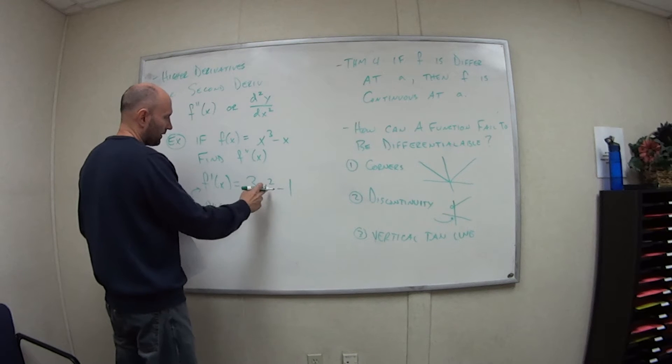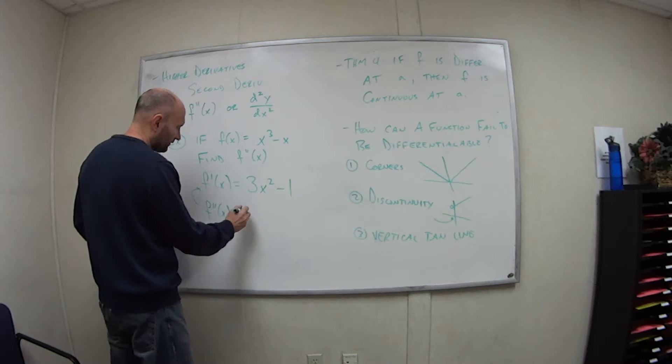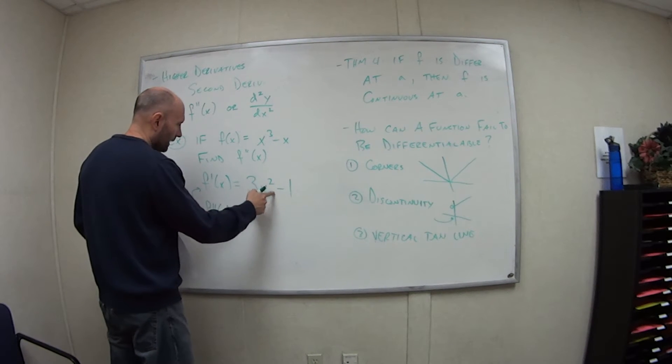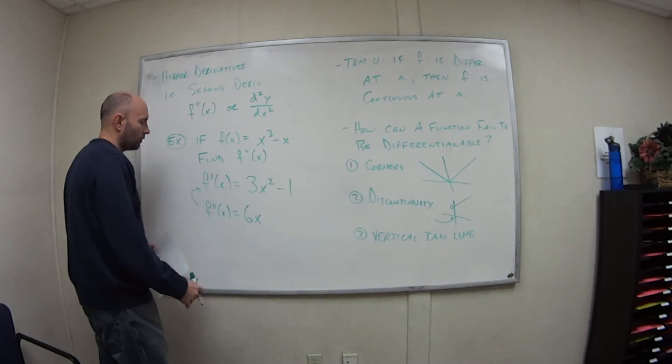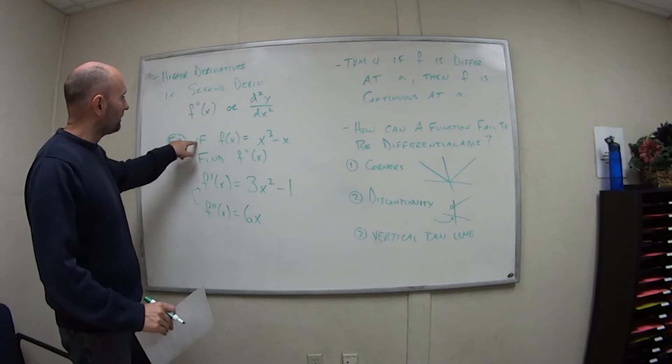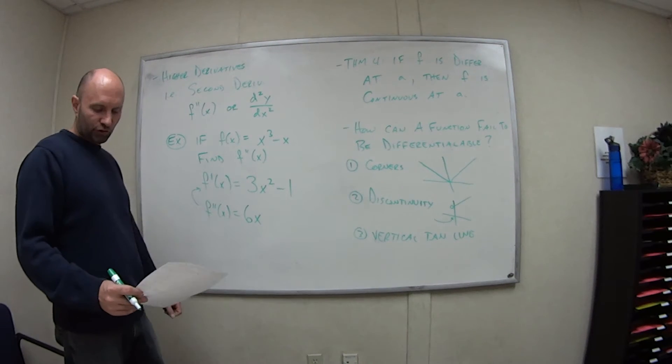The second derivative, I just take the derivative of the one I just found. So the same process: two times three is six, two minus one is one, so six x, and then the minus one goes away. So the second derivative of this function is just six x.